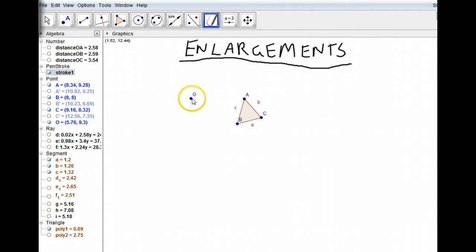The first step we're going to do is draw a line from our center of enlargement through each of the corners of our triangle. So let's just do that. Okay, you can see that I've drawn that line from the center of enlargement all the way through A, from the center of enlargement through C, and through B, all the way through.